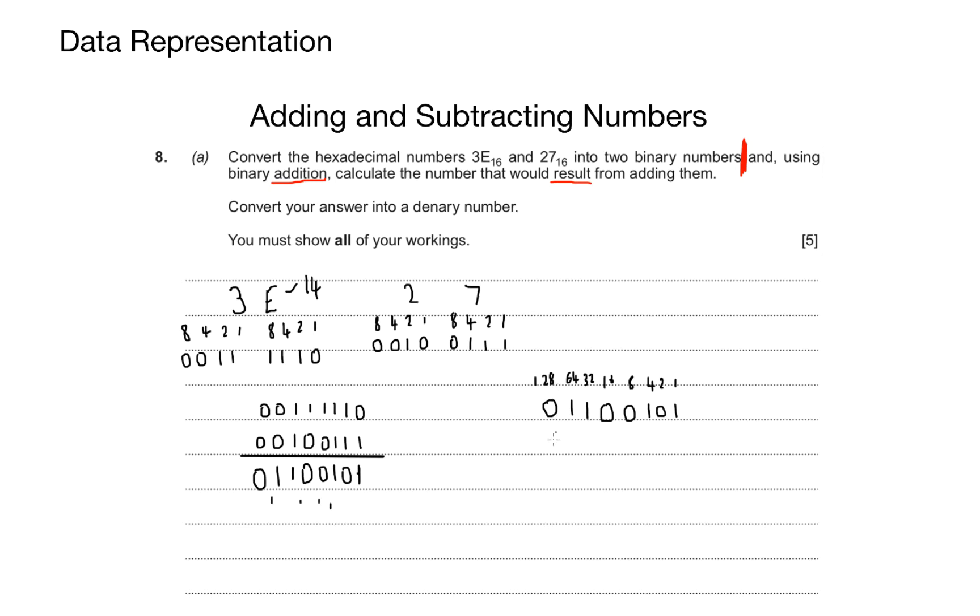So I'll simply take my final answer, apply the values from 1, 2, 4, 8, 16, 32, 64, and 128 on top, and I just add the numbers up. And that gives me a total of 101.